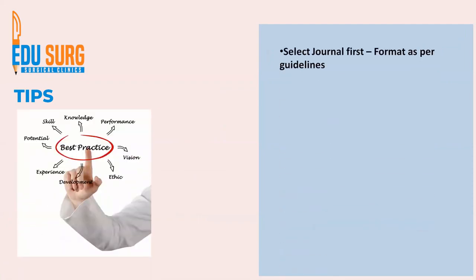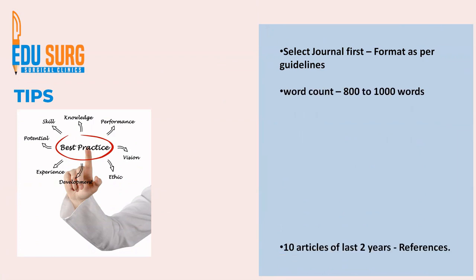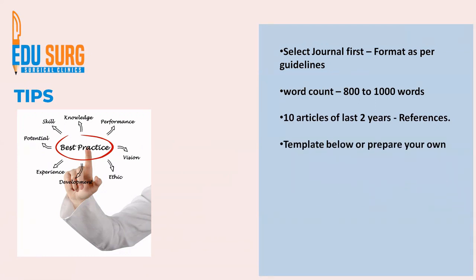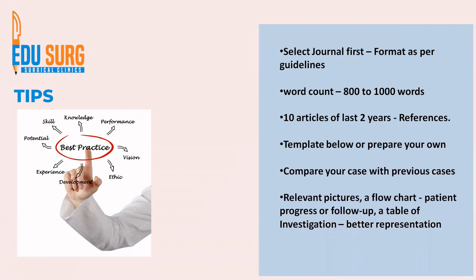For tips on writing a good case report: select the journal first and format your report as per its guidelines, sticking to the 800 to 1000 word count. Selecting 10 to 12 similar articles from the last two years will serve as your references. Relevant, recent references are always preferred — if writing in 2023, your references should ideally be from after 2020 unless quoting historical data. Use pictures, flowcharts, and tables for better representation, and keep patient consent ready.